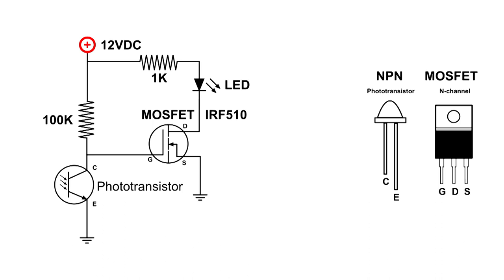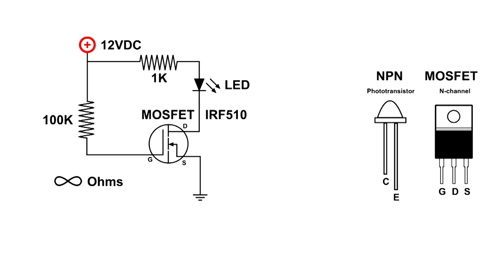Now how this circuit works: when the phototransistor is in darkness it has a very high impedance, which means it really doesn't even exist in the circuit anymore. The positive voltage goes directly to the gate of the MOSFET which turns on the LED. The other scenario is when light hits it, it's pretty much a direct short, which shorts out the positive voltage going to the gate and turns off the MOSFET. Here's a demonstration of the original circuit.